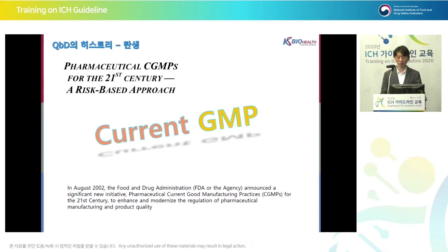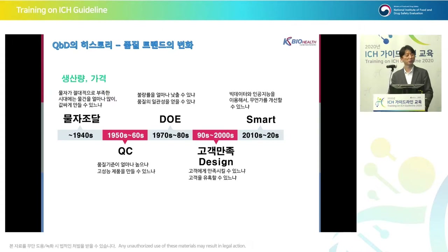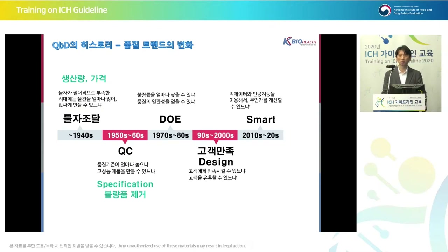A risk-based approach was also recommended from this. The trend for quality management has changed. In the 1940s, there was a shortage of supplies, so it was mainly about increasing production and reducing prices. Supply of material was important — it was the era of imperialism, getting materials from other countries. In the 1950s and 60s, the defect ratio increased, and it was difficult to meet the quality standard. There was a need for selecting good quality products, and that's when QC was introduced.